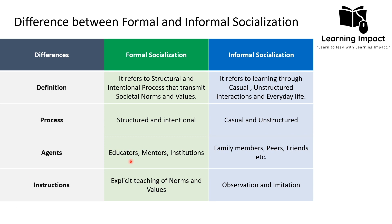Regarding agents: formal socialization occurs through educators, mentors, or institutions which have some sort of formal setting. For example, military training — every individual has a defined role of defense, so it is a formal institution. In case of informal socialization, it occurs through family, peers, or friends, which are informal institutions.